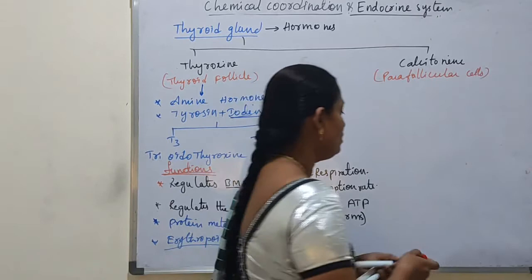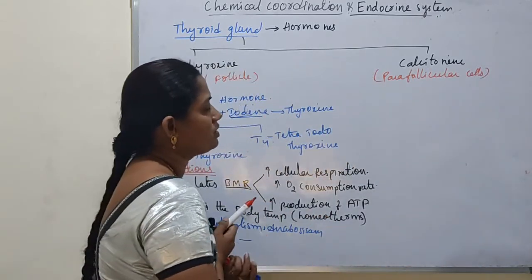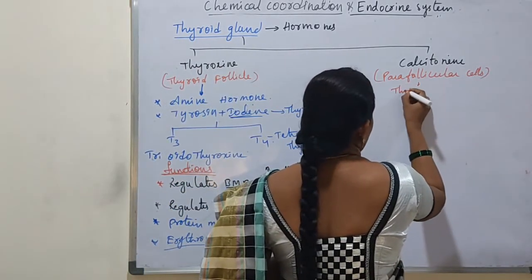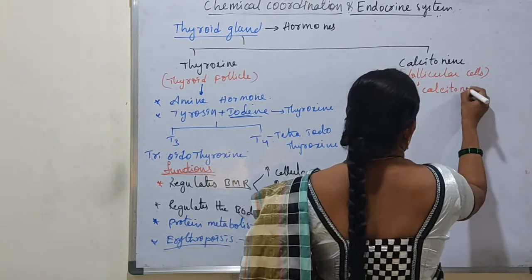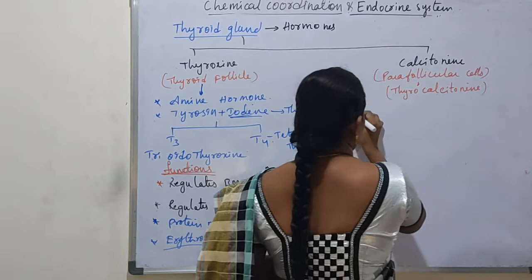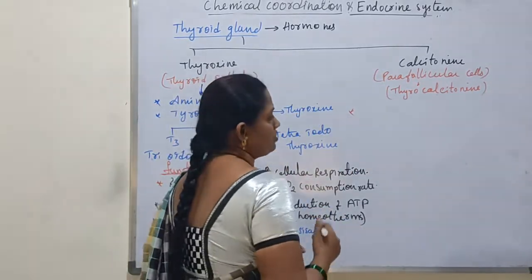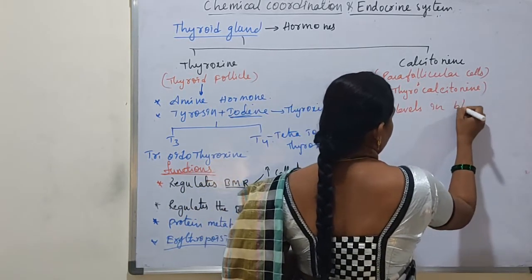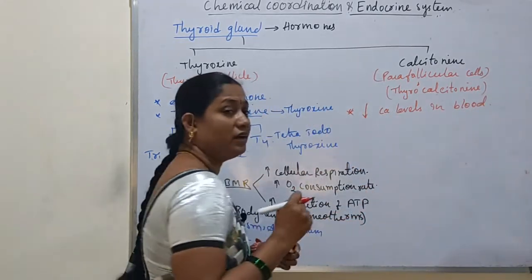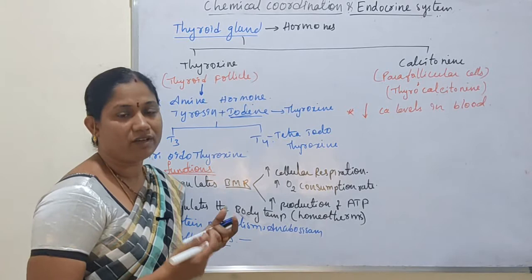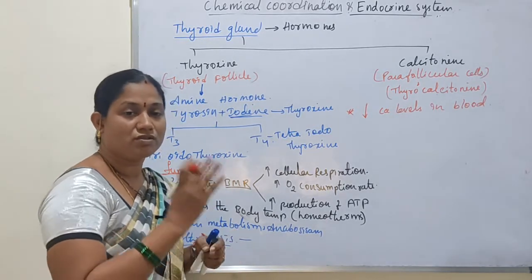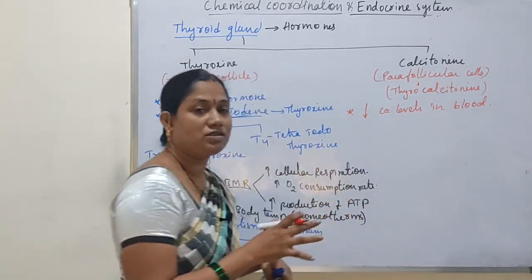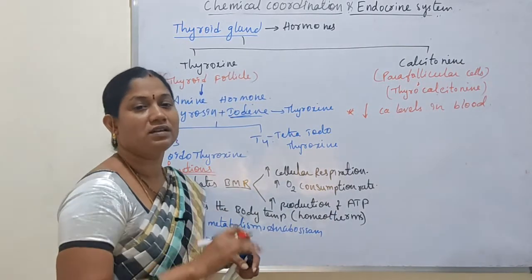Calcitonin hormone is secreted by the parafollicular cells. It is also called thyrocalcitonin. Its main function is to decrease the calcium levels in the blood. Whenever calcium levels are increased in the body, that situation stimulates the production of calcitonin hormone.